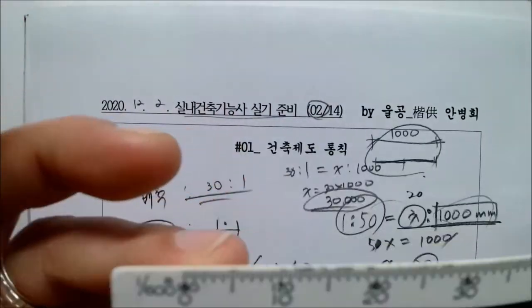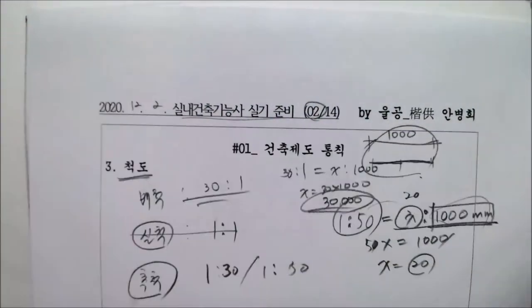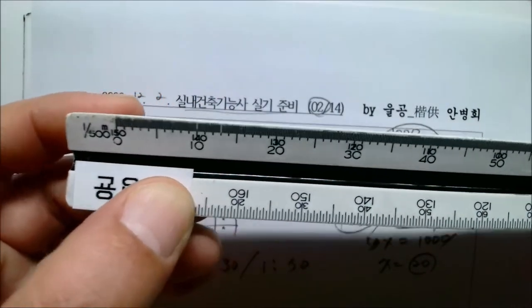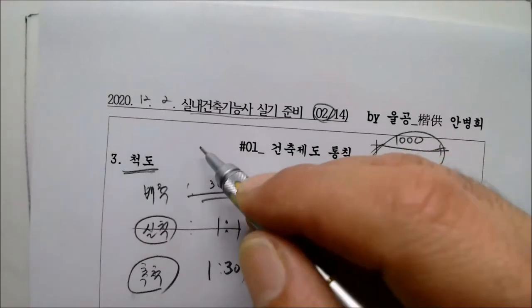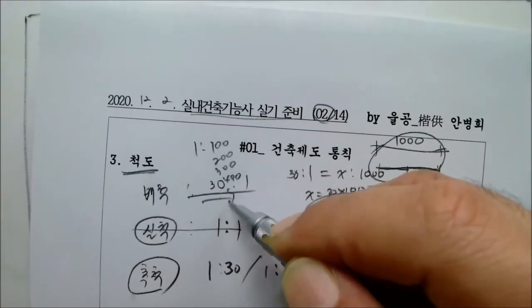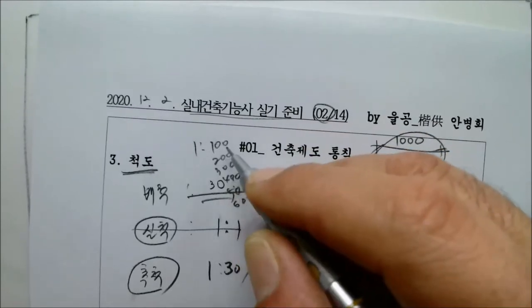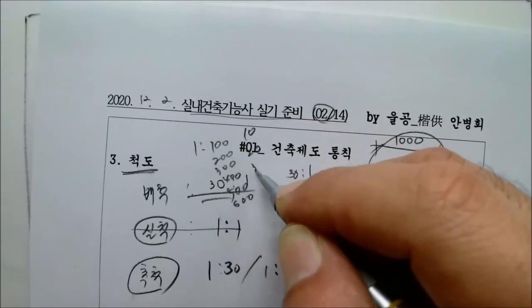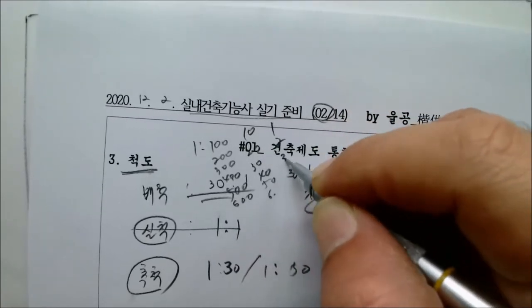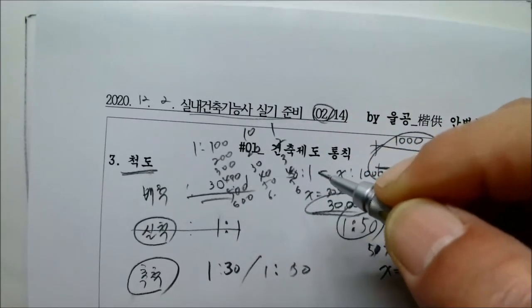1대400. 500. 600. 우리 친구가 자네요. 자 1대500. 600. 그래서 1대100. 200. 300. 400. 500. 600. 1대10. 20. 30. 40. 50. 60. 1. 2. 3. 4. 5. 6. 7.